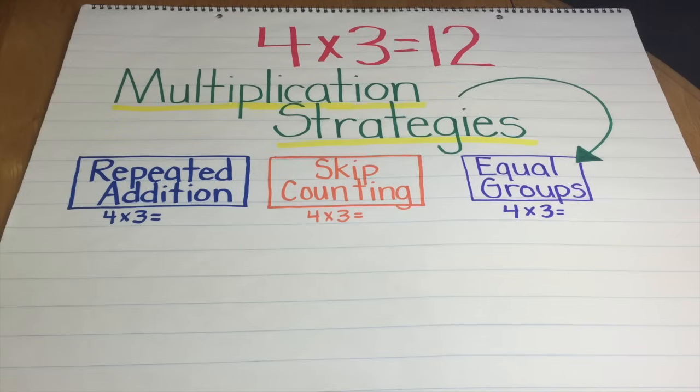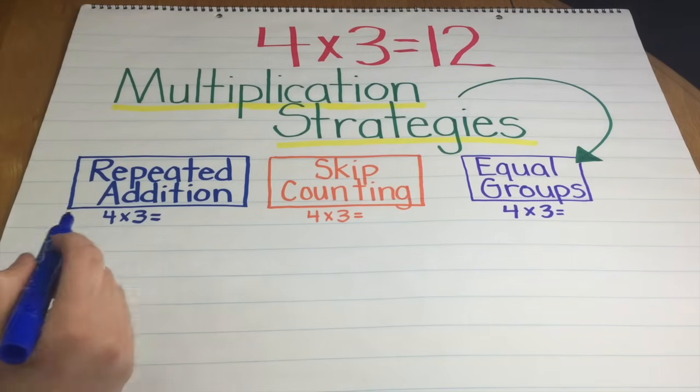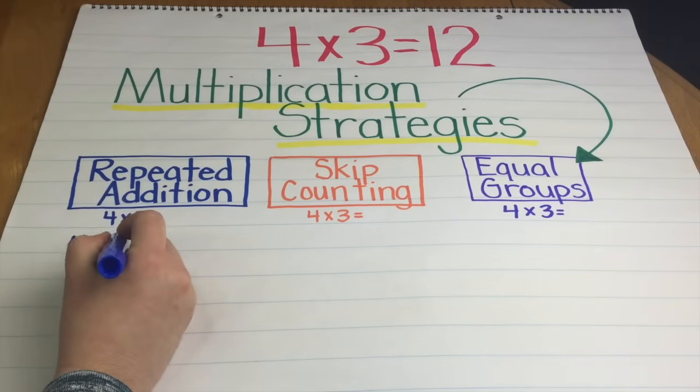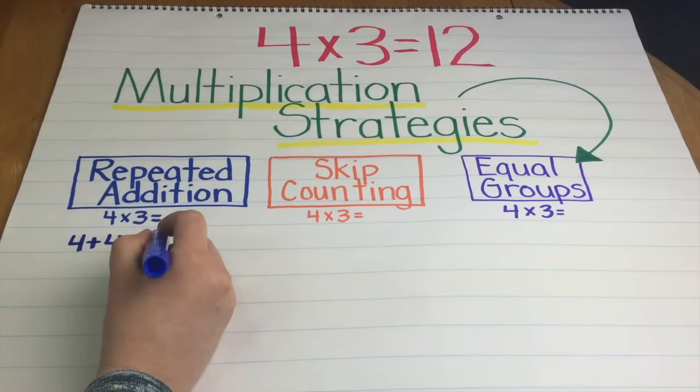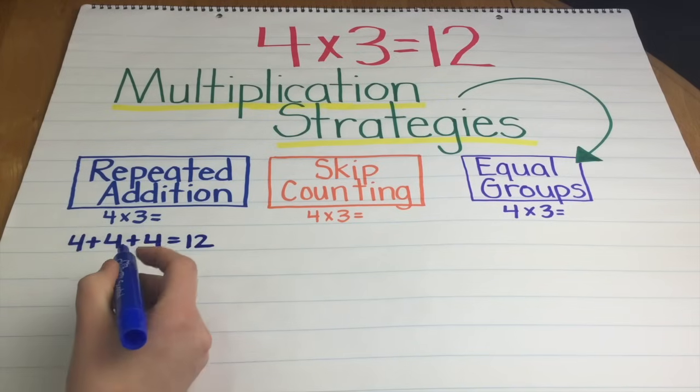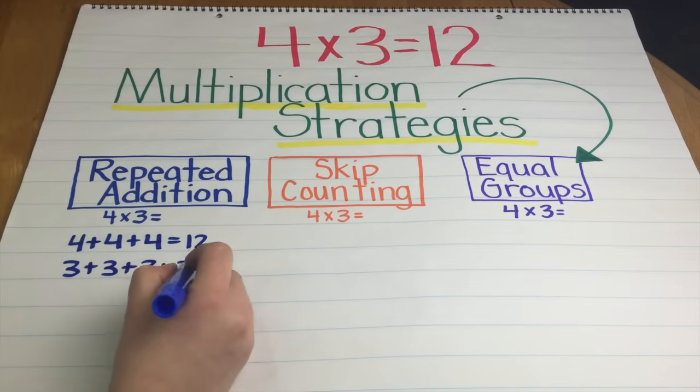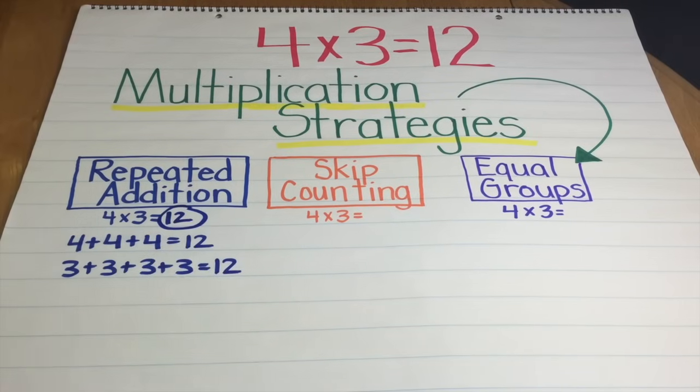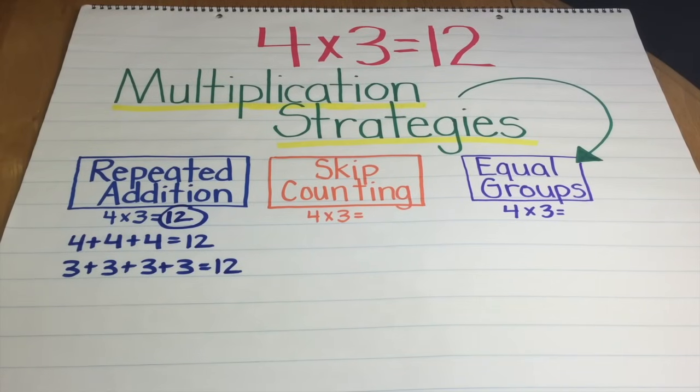The first strategy is repeated addition. So you will see for all six strategies I'm taking the multiplication problem of 4 times 3. If I'm using the repeated addition strategy, I'm going to take 4 times 3 and show them that you can do 4 plus 4 plus 4 three times and that will get you the answer of 12. Or you can take 3 plus 3 plus 3 plus 3 four times and that will get you the answer of 12. So that is one strategy I use when teaching multiplication.